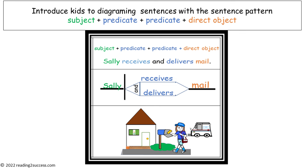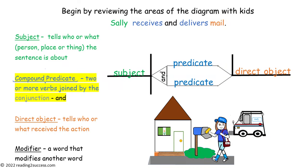Introduce kids to diagramming sentences with the pattern subject, compound predicate, and direct object. Begin by reviewing the areas of the diagram with kids. This sentence pattern differs from the previous two because it has two predicates — a compound predicate — joined by the conjunction and.